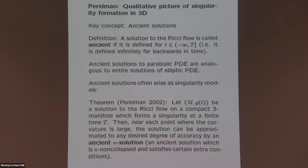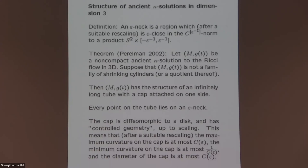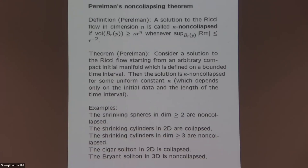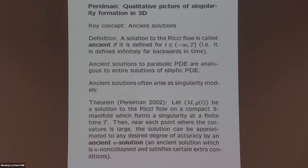Singularities are modeled on what are called ancient κ-solutions. The second insight of Perelman is that κ is actually universal—independent of the initial data. Once you know any constant works, Perelman showed the constant can be chosen universally for the singularity, not depending on the initial data.